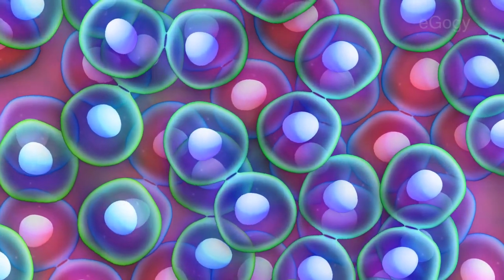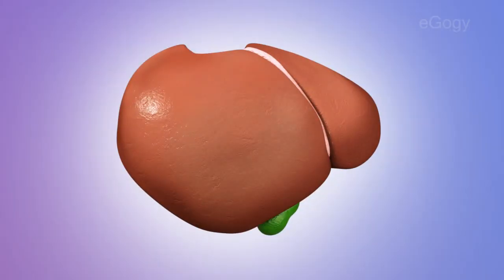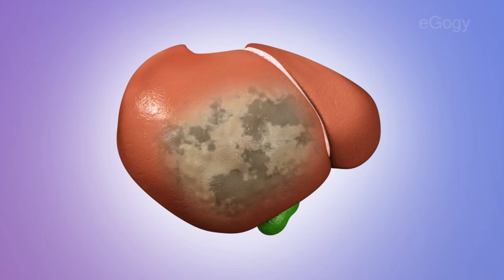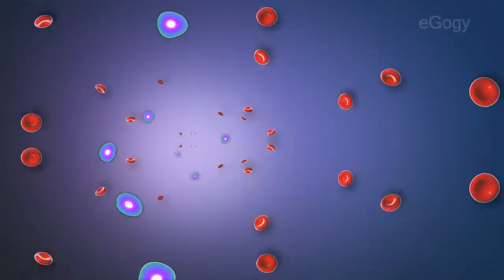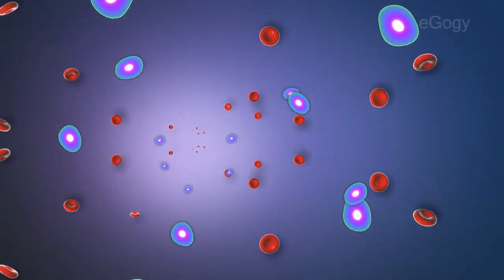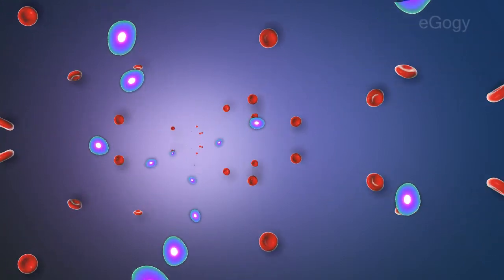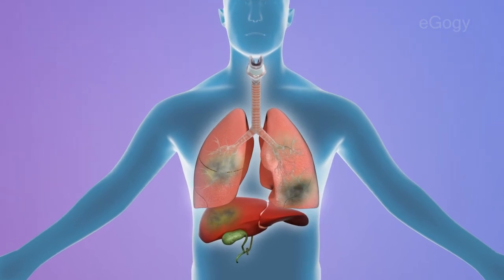These mutated cells multiply uncontrollably and destroy other cells by consuming the nutrients meant for them. These kinds of cells are also known as cancer cells. They are capable of reaching other parts of the body from their place of origin through the blood circulatory system, and the cancer cells start multiplying throughout the body.